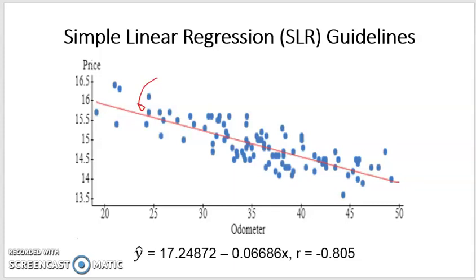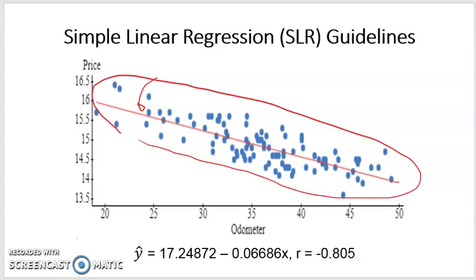Now we've already talked a little bit about the strength of this relationship. Remember, the more tightly clustered these data are about the line, then the higher the correlation, the closer it is to 1 in absolute value. We already know this is a negative relationship because as odometer increases, the reading increases, the price decreases. That's what's meant by a negative relationship. From our earlier StatCrunch output, we knew that the correlation was negative 0.805, and that's pretty high.